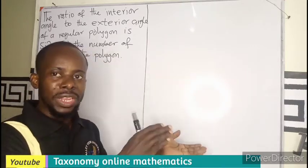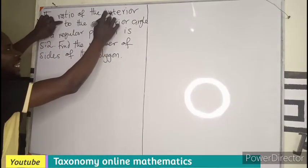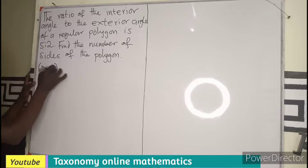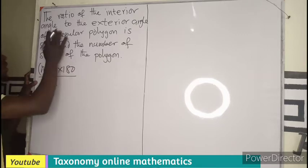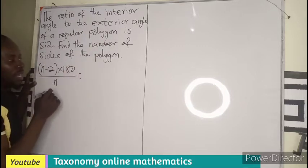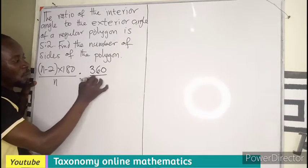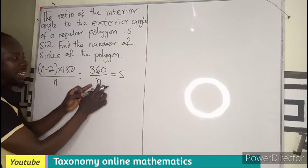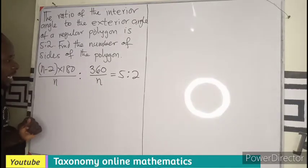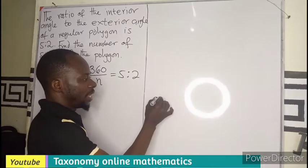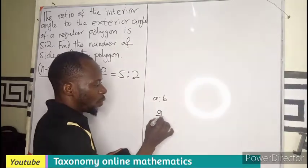We can use that approach in solving it, or we can also use the interior angle formula directly. The interior angle formula is (n − 2) × 180 / n, and this corresponds to the ratio value of 5. The exterior angle formula is 360 / n, and this corresponds to the ratio value of 2. Since a ratio a:b can also be written as a/b, we can convert this ratio into a division.